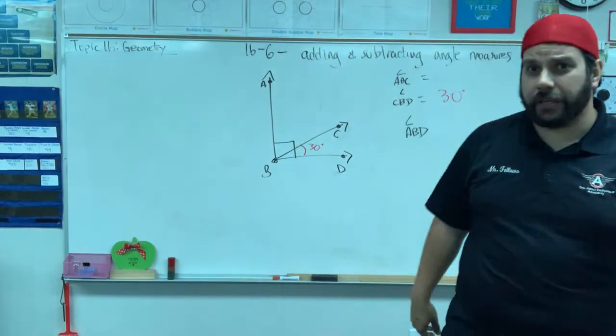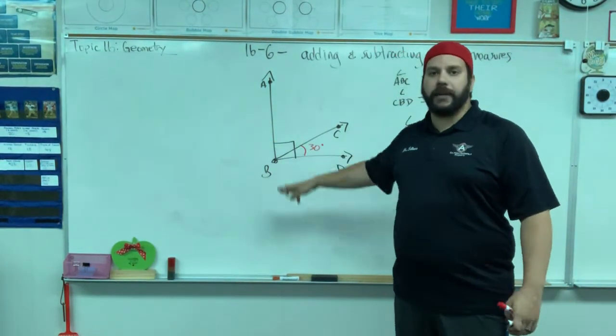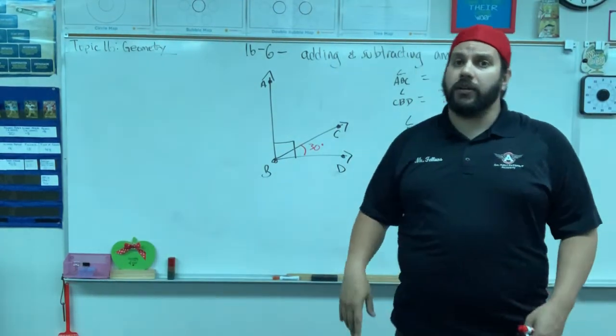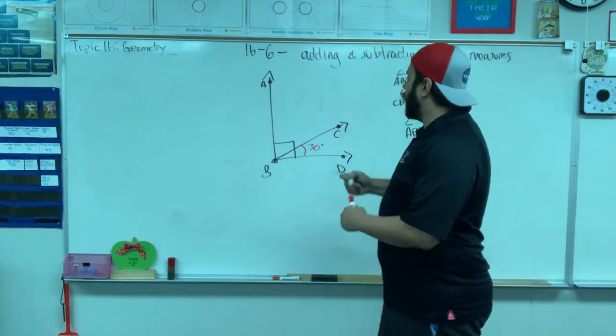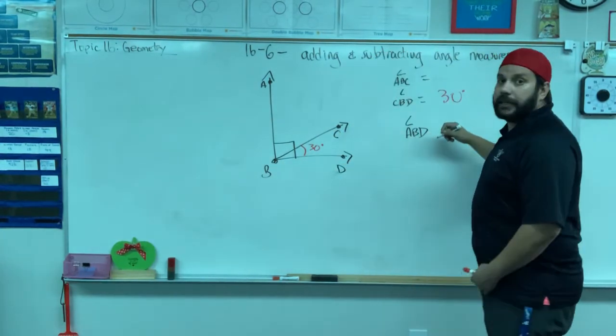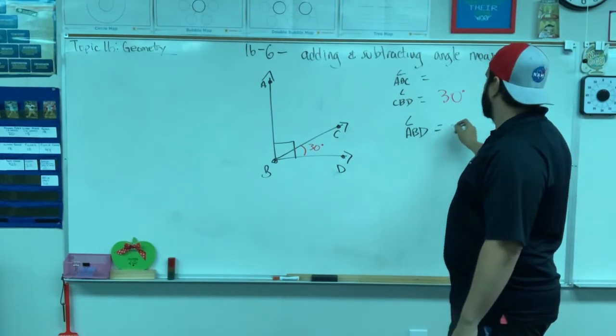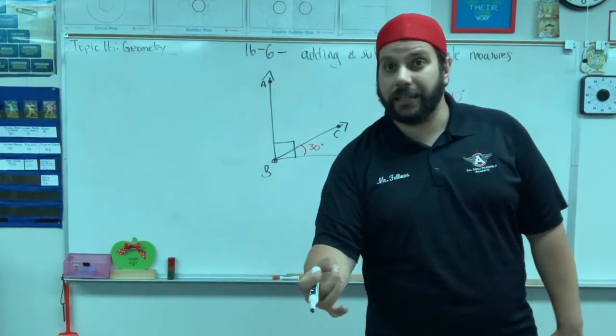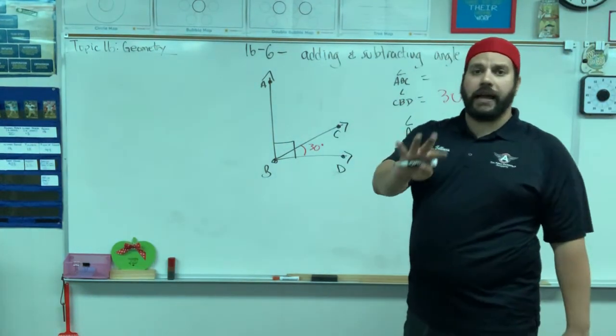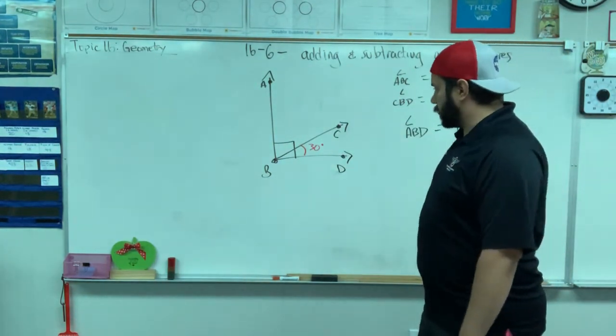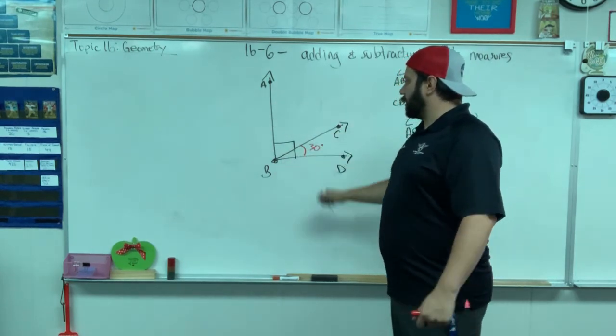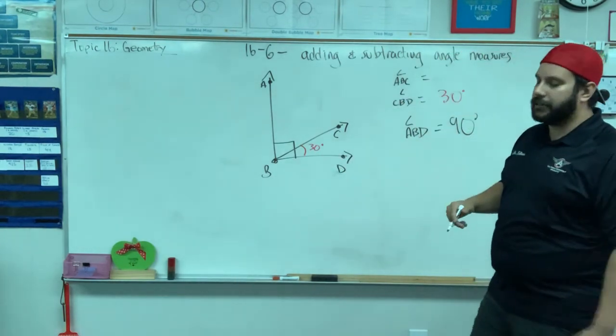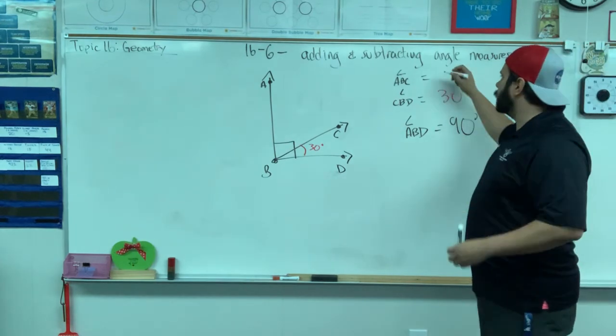Alright, what was the one thing I didn't mention but you should have seen it and immediately known what was going on? Yes, this little square right there. What does that mean? That little square means it's a right angle, and a right angle is 90 degrees. So I know that ABD is 90 degrees because of the way it was written. You don't put a square on an angle unless it's 90 degrees. Therefore now I know I have enough information to solve what angle ABC is, because angle ABC plus angle CBD must equal 90 degrees. And what plus 30 equals 90 degrees? Yep, 60.